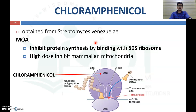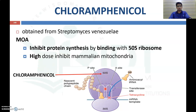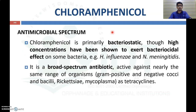Now coming to chloramphenicol — another broad spectrum antibiotic obtained from Streptomyces venezuelae. Its mechanism of action is similar to tetracycline but differs in ribosome binding: it binds with the 50S subunit of the ribosome and inhibits protein synthesis. At high doses it can also inhibit mammalian mitochondria, affecting protein synthesis in mammalian cells, thereby producing a bacteriostatic effect.